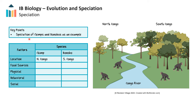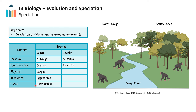Let's take the chimpanzee and bonobo as an example. The physical barrier here is the Congo River, which the ancestral population of both species crossed when it was very low. When the river rose again, the population was reproductively isolated. North of the Congo River, the last common ancestor population experienced low food sources, whereas south of the Congo River the population had more plentiful food resources. This differential selection pressure is hypothesized to have pushed chimps and bonobos apart — chimps are larger and more aggressive with a patriarchal social structure, while bonobos are smaller and more peaceful with a matriarchal social structure.